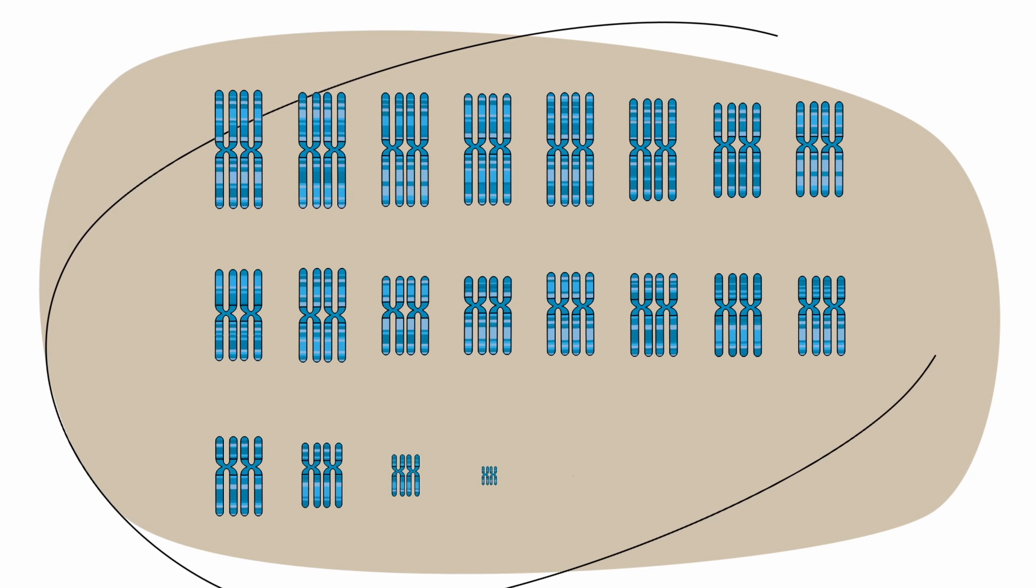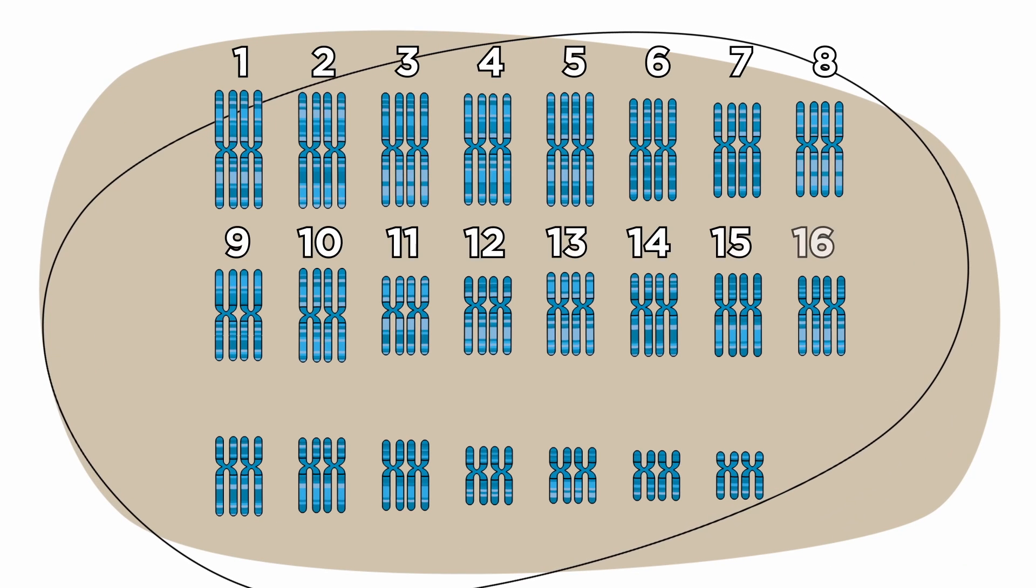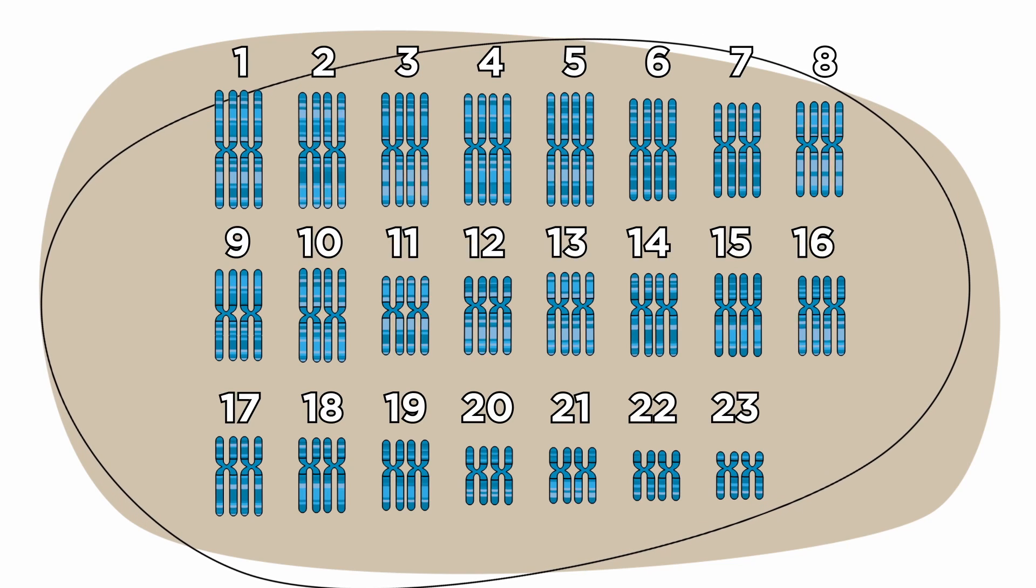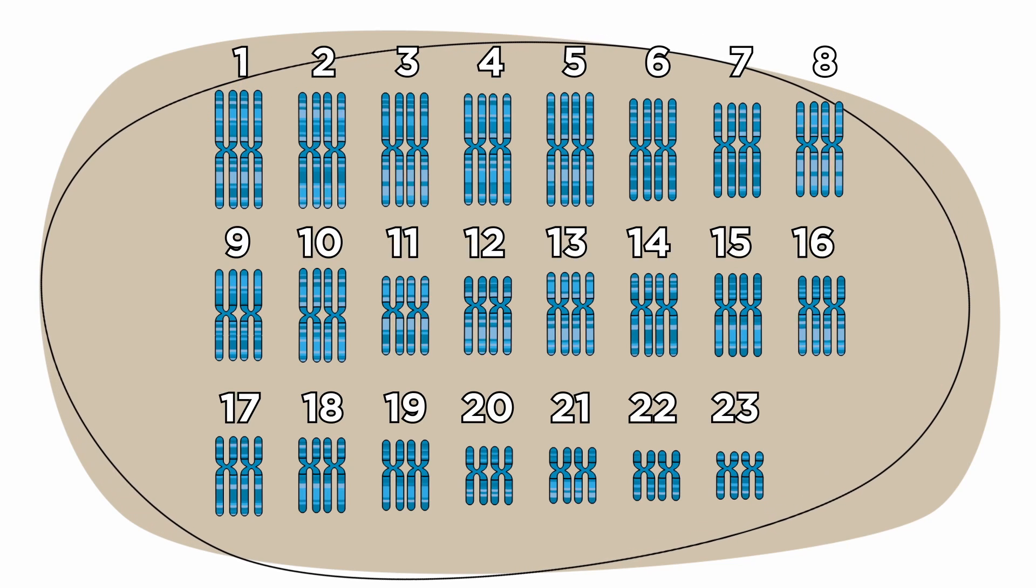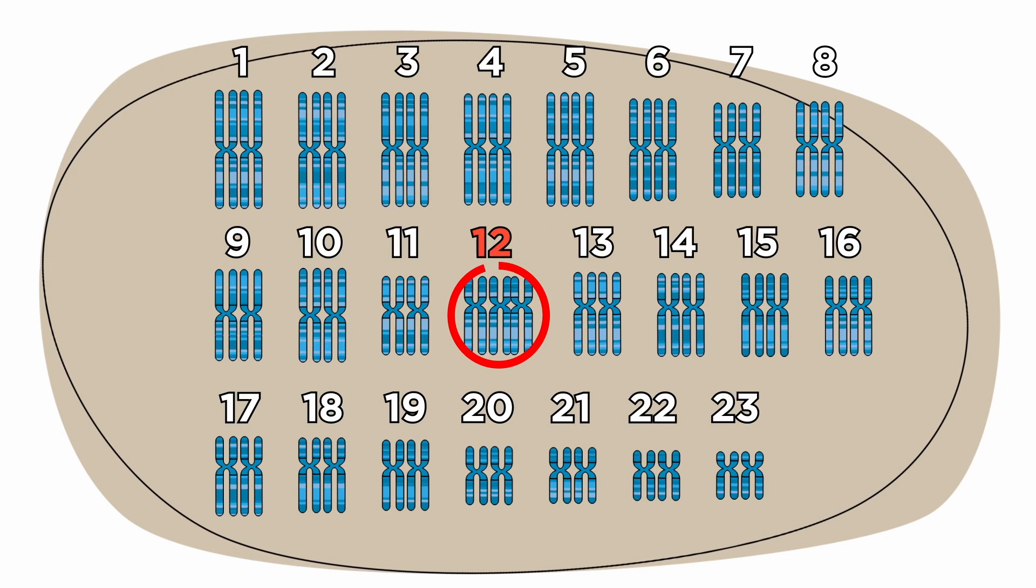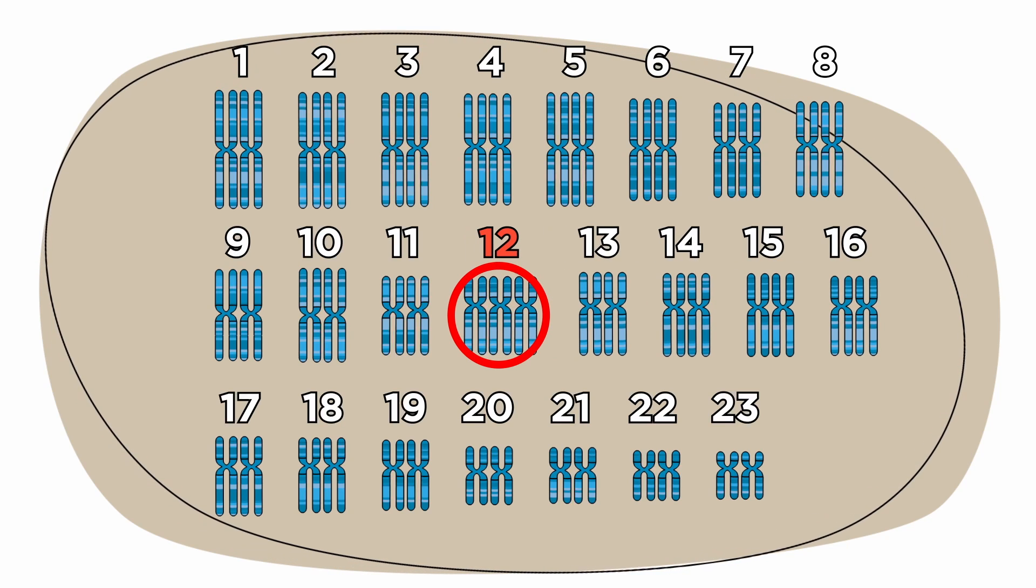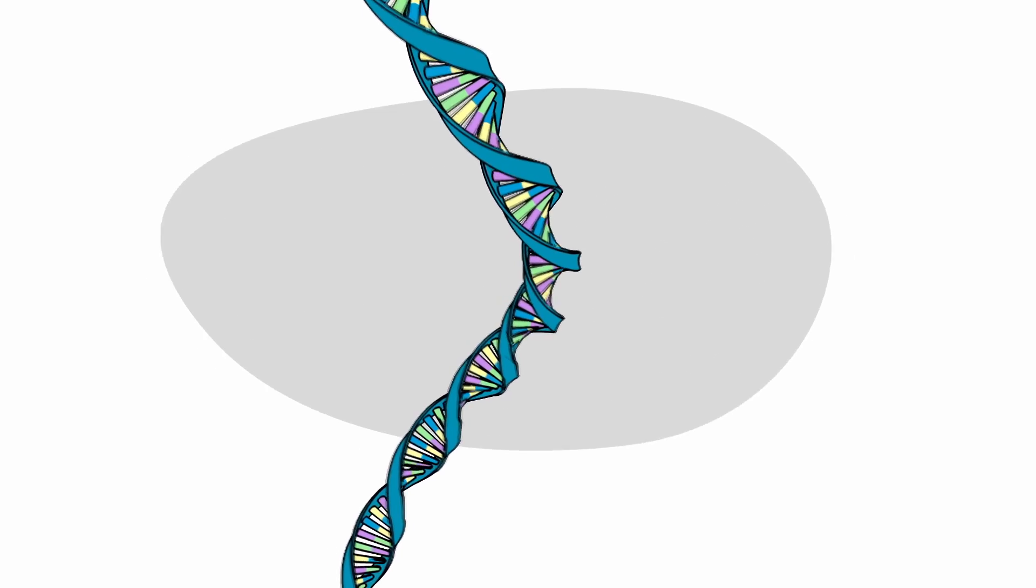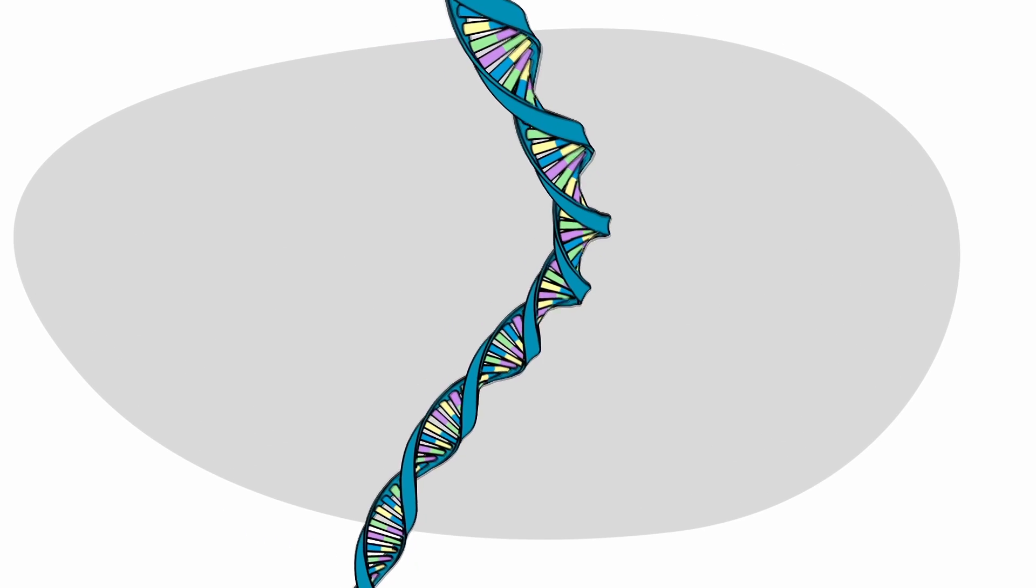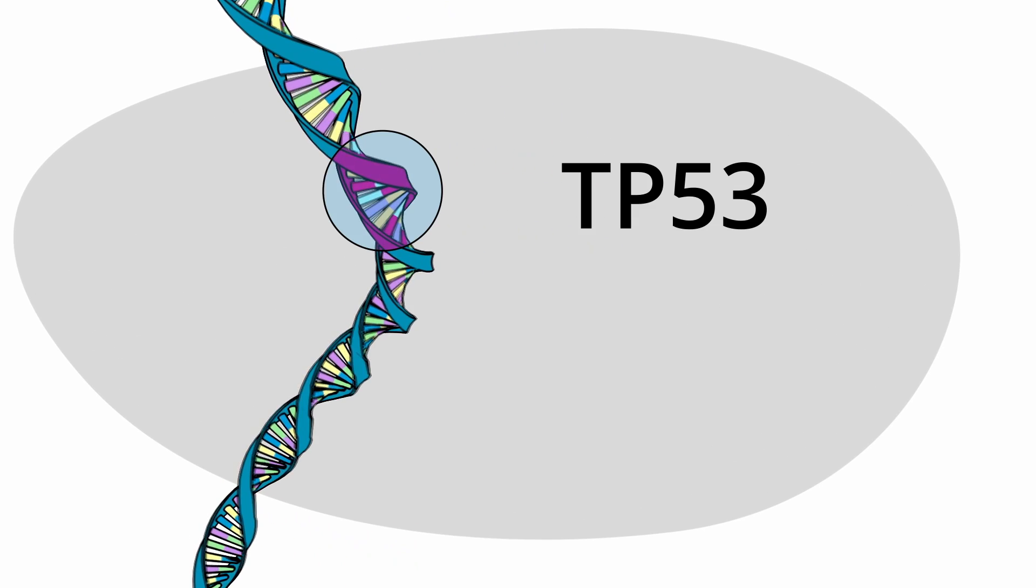You could also have a change called a mutation, which may mean you have an extra chromosome. Some people with CLL have an extra 12th chromosome, which is called trisomy 12. Or you may have other changes to genes tp53 or ighv, called tp53 mutation and ighv mutation.